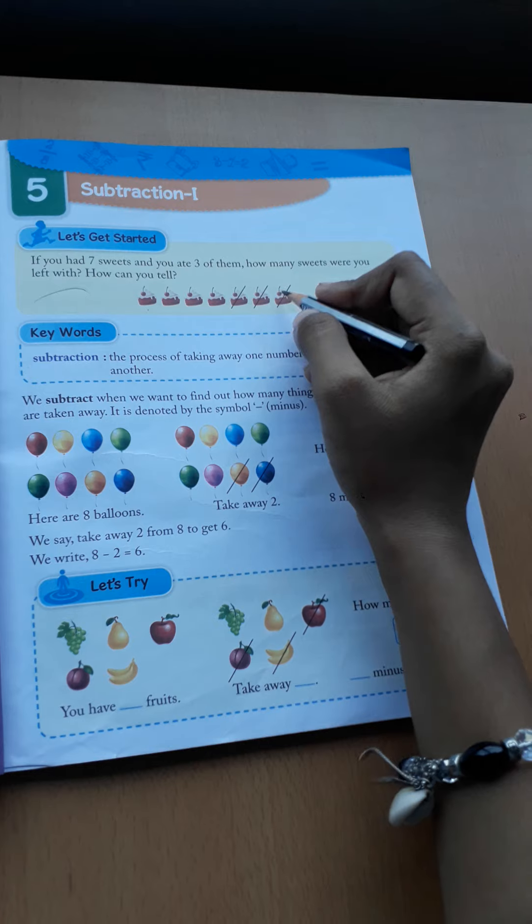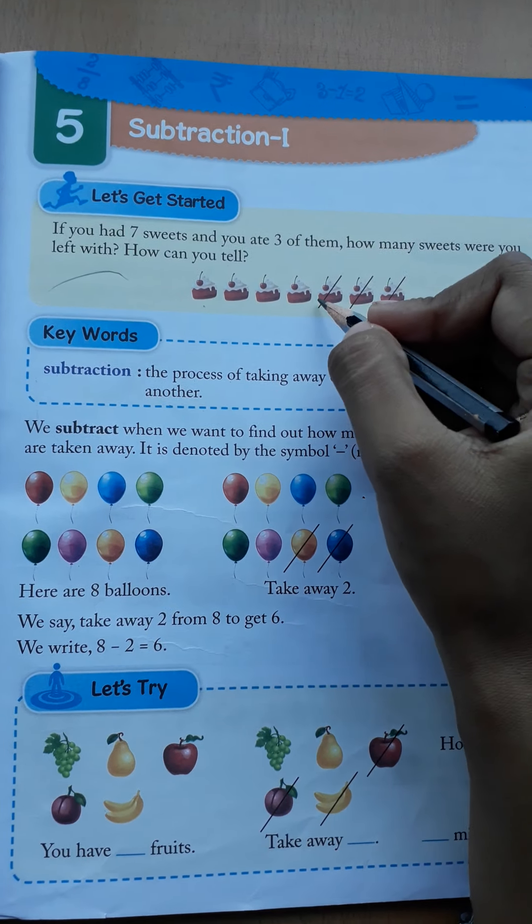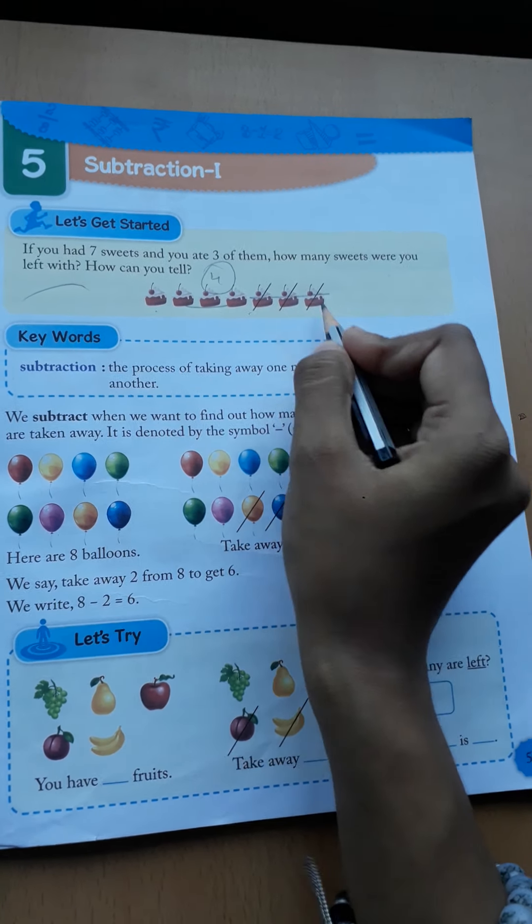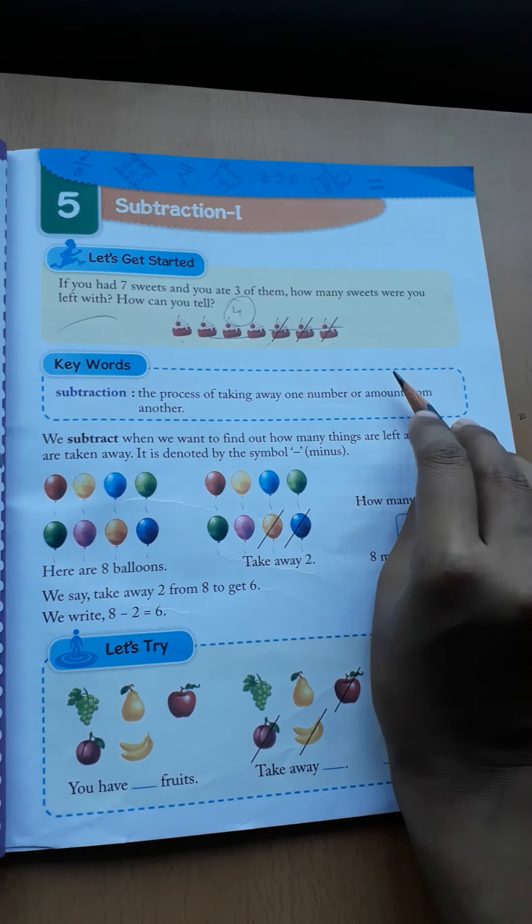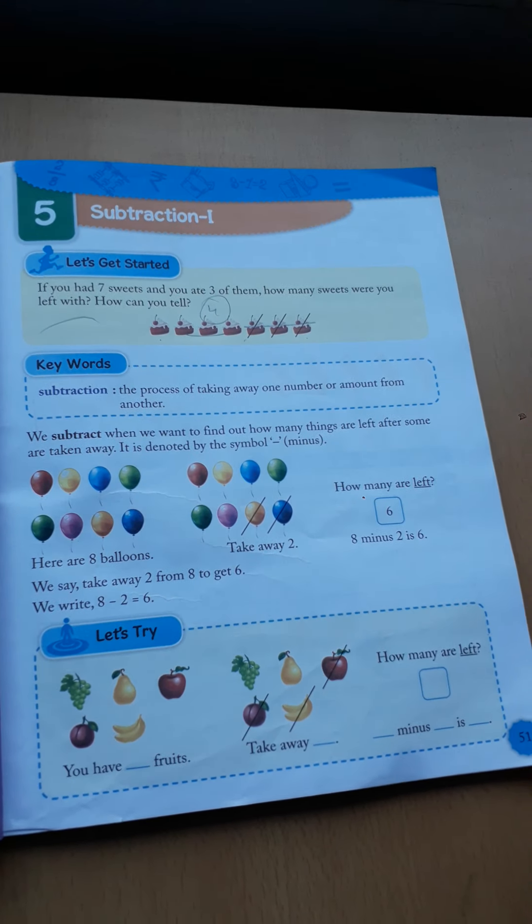The process of taking away means if you see, some pastries are given here and if we take three of them, how many left? One, two, three, four - four left. So the process of taking away some amount from something, that is called subtraction.